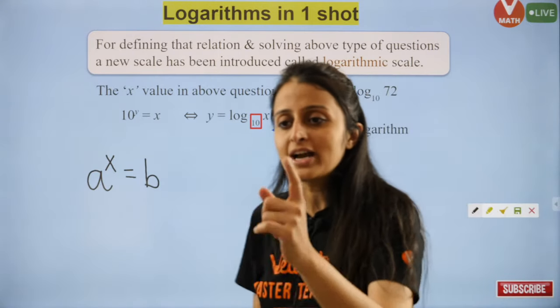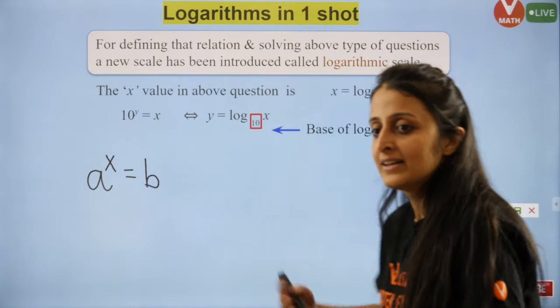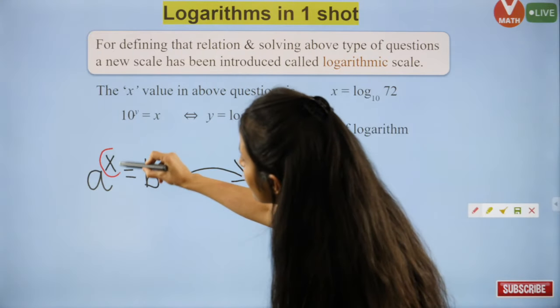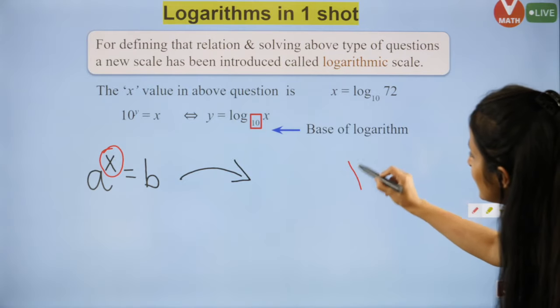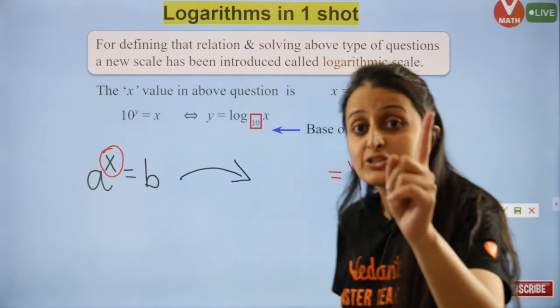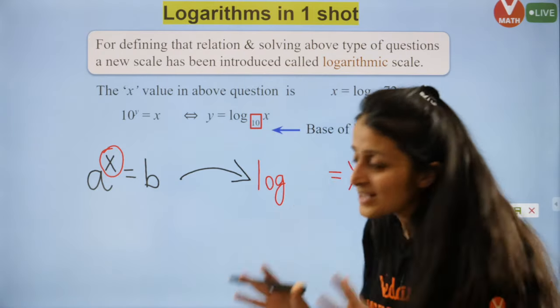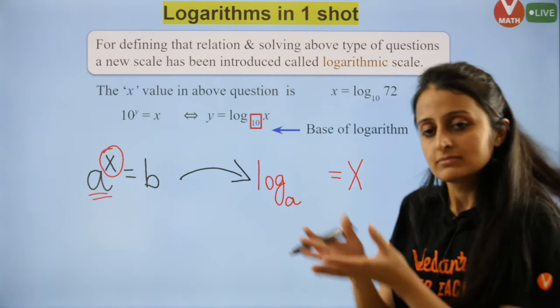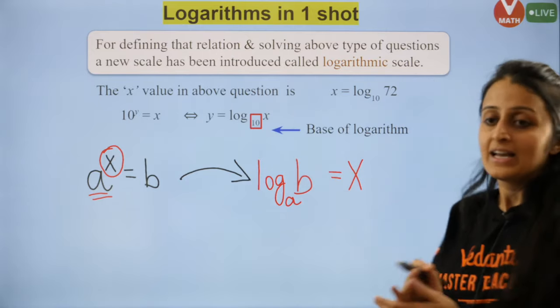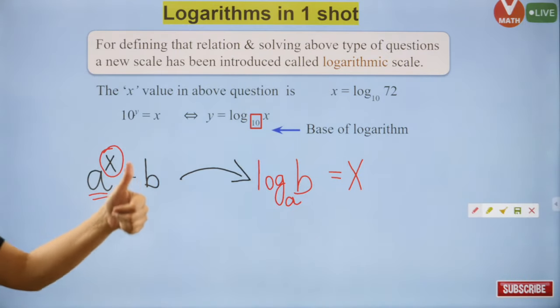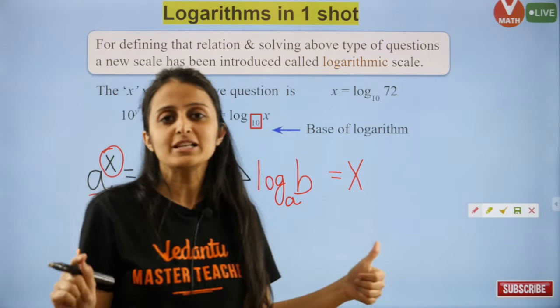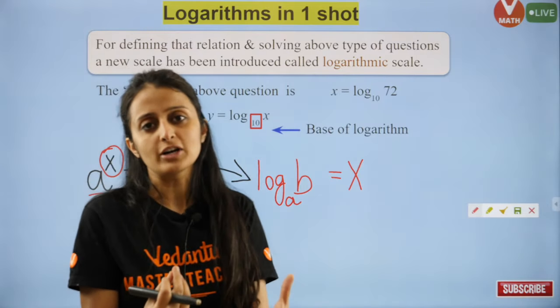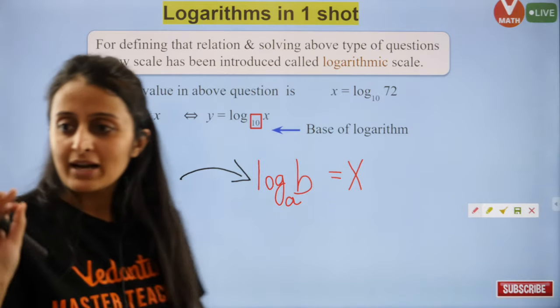Let's convert this in log. I should know it vice versa. If this thing is there, how will you write it back? Understand, whoever is in the base will help the person on the other side to rise. So this becomes 10 square is equal to 100. Let me test you. A raised to power x is equal to b - convert this in log.